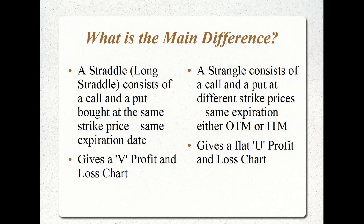The strangle is a very similar trade but consists of buying a call and buying a put at different strike prices with the same expiration. The most common approach is to buy an out-of-the-money call and an out-of-the-money put. For example, if we have a stock trading at $50 with earnings in two weeks, I may buy a $47.50 strike put and a $52.50 strike call, expecting a wide swing of about 8 to 10 percent in either direction. The strangle gives you a flat U-shaped profit and loss chart.